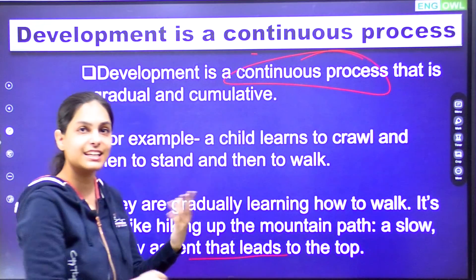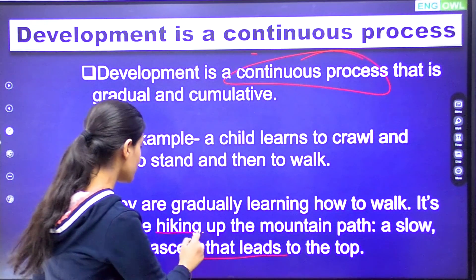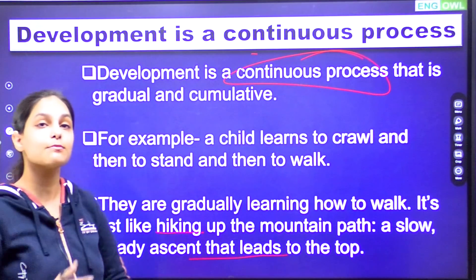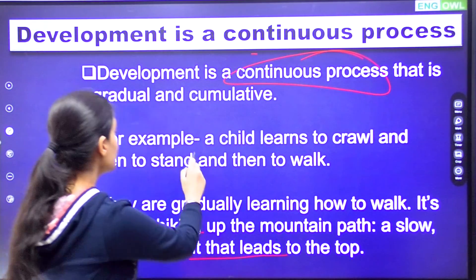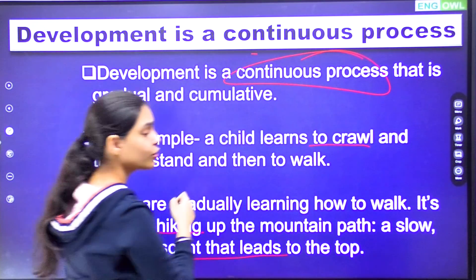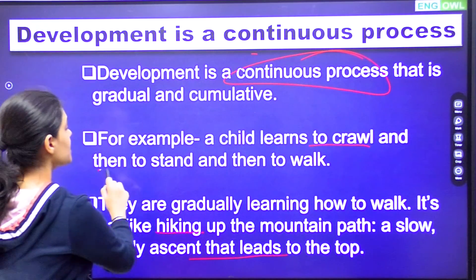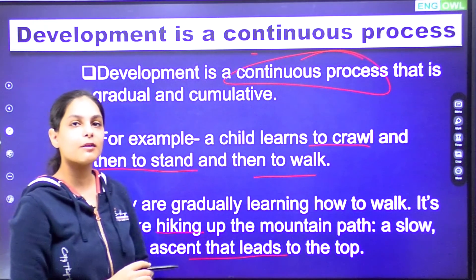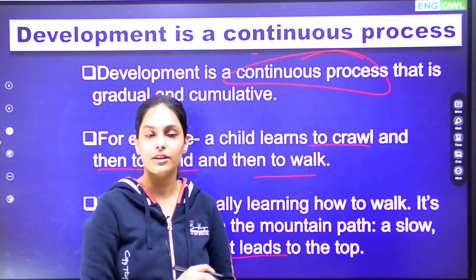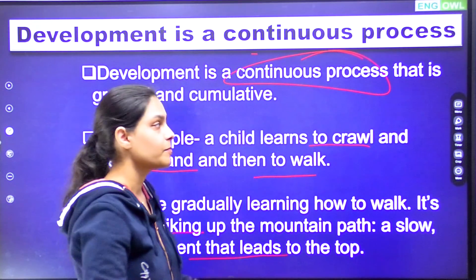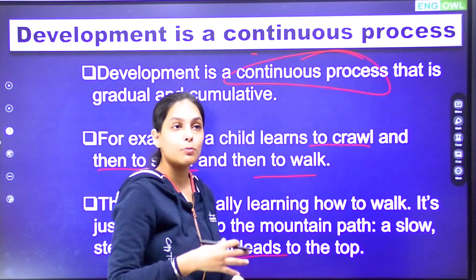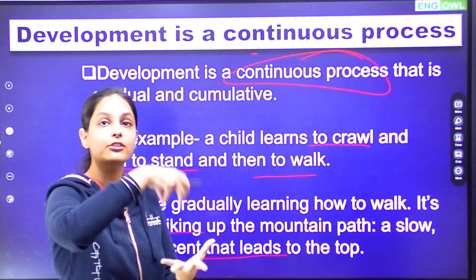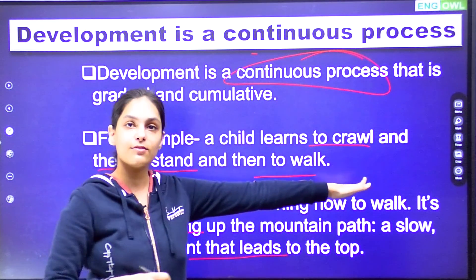Development is a gradual, slow process. We can't say it happens in one step. First we crawl, then we stand, and finally we learn to run. In child development papers, the first milestone is when the child learns to walk. For a child's growth and development, learning to walk is considered a significant achievement.